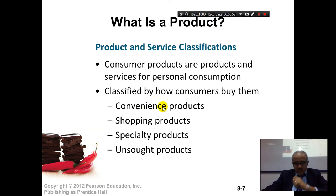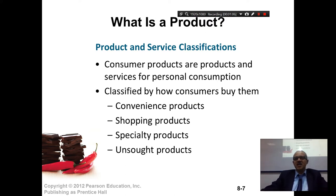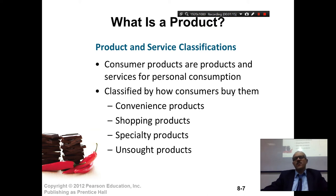A convenience product is a product that you buy from the nearest shop. Let's say if you run by a newspaper place, you take a newspaper and you run — it's convenient, you just pick it, you know what newspaper you want and you take it. If you buy a toothpaste, you just buy the toothpaste. You don't go and shop.